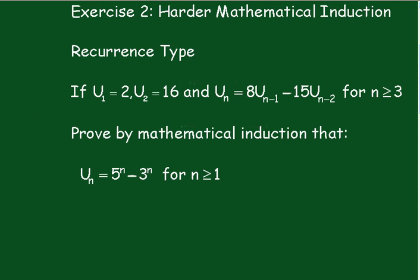Exercise 2: Harder Mathematical Induction, Recurrence Type. If U1 equals 2, U2 equals 16, and Un equals 8·U(n-1) minus 15·U(n-2) for n greater than or equal to 3, prove by Mathematical Induction that Un equals 5 to the n minus 3 to the n, for n greater than or equal to 1.